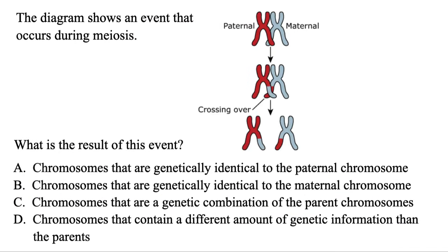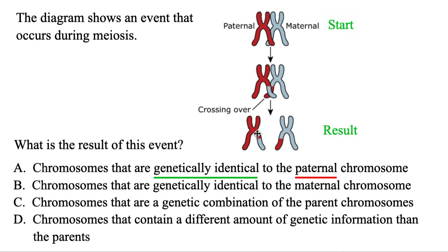Let's look at a diagram. The diagram shows an event that occurs during meiosis — what is the result of this event? Based on the arrows, here's the start and here's the result. Option A: chromosomes that are genetically identical to the paternal chromosome. But neither of these is identical to the paternal (red) one, so that is not true.